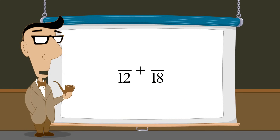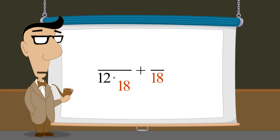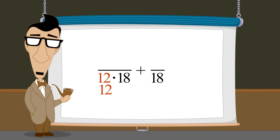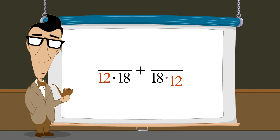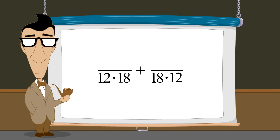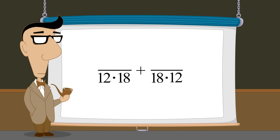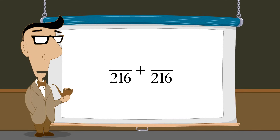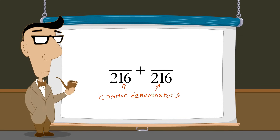We saw that the easiest way to do this is to multiply each denominator by the denominator of the other fraction. However, sometimes this creates an unnecessarily large common denominator.